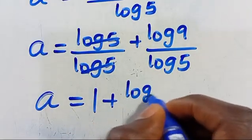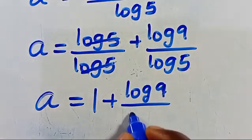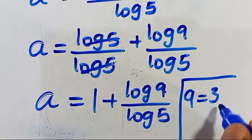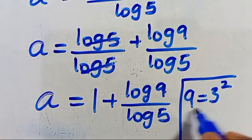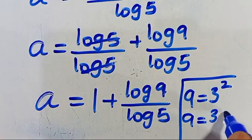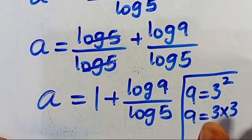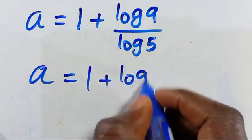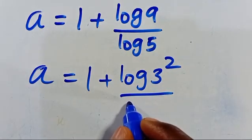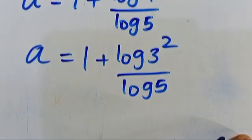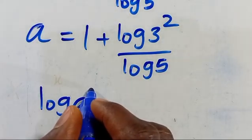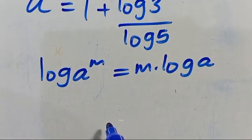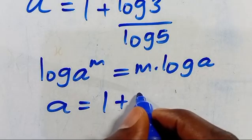We notice that 9 can be written as 3 squared, meaning 9 equals 3 times 3. Substituting this, we get a equals 1 plus log of 3 squared divided by log 5. Applying the log power rule, this power 2 comes down as a multiplier: a equals 1 plus 2 multiplied by log 3 divided by log 5.